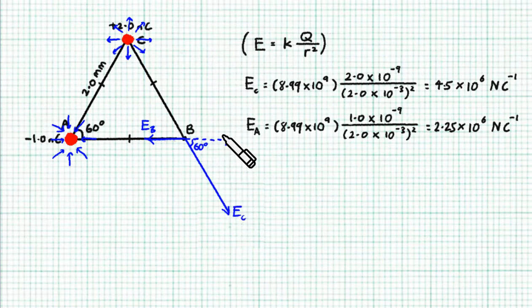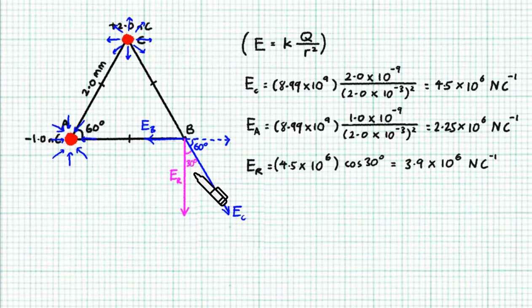would be EC cos 60 degrees, which will exactly cancel the leftward EA. What remains is simply the vertical component of EC, and that is the resultant electric field strength. Since there's 30 degrees here, the resultant field strength can be calculated quite simply by using EC cos 30 degrees. So it's 3.9 million newtons per coulomb.